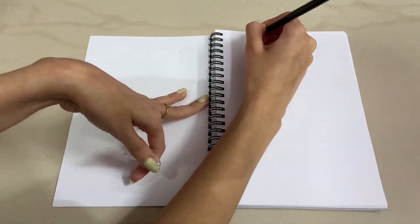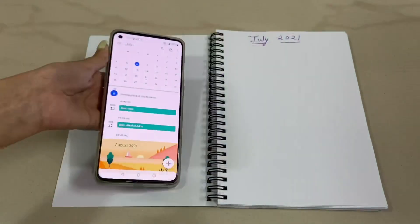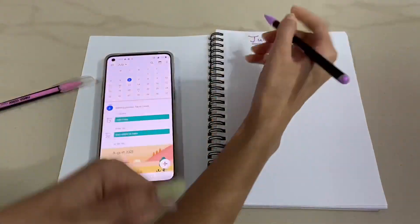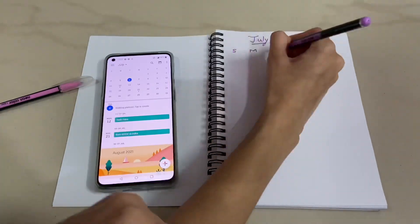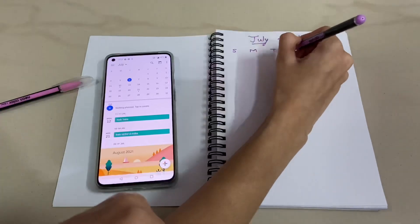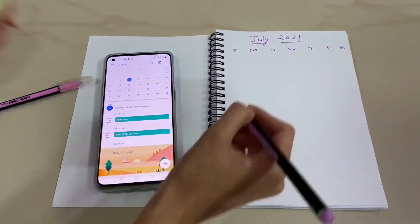First, I will be making the monthly sheets. For this, I will need two pages. So first I will write the month, and then I will take out my phone and open calendar and draw the entire calendar. So here I can mark the important events of the month like birthdays or any events or any festivals.